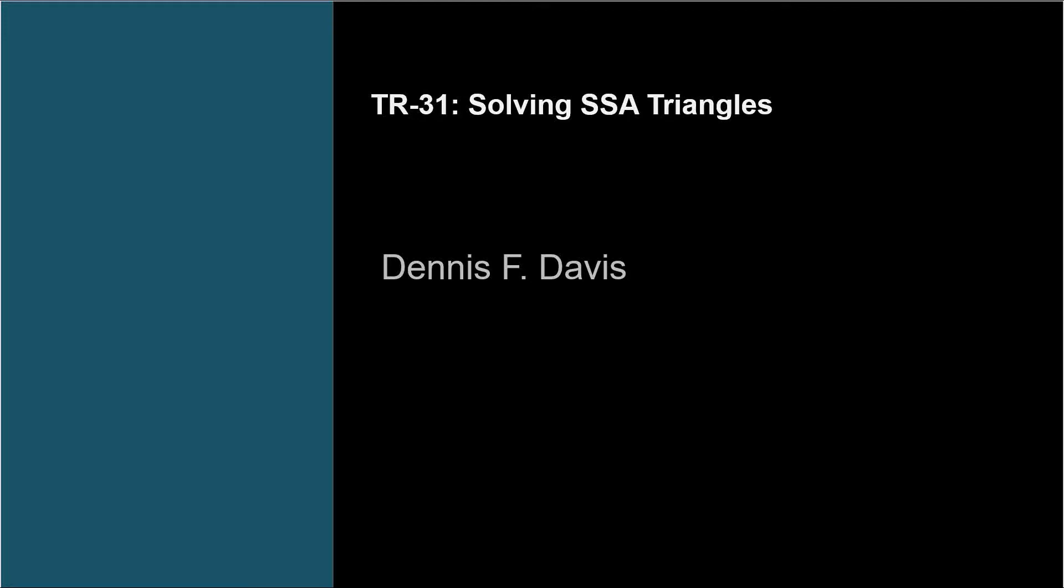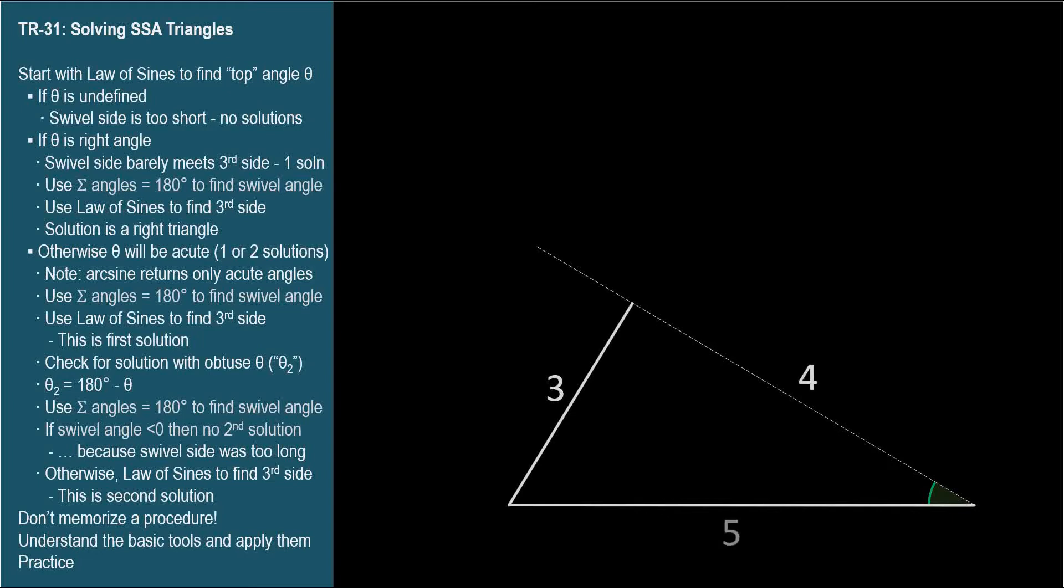Let's investigate the various SSA scenarios described in TR-30. I'm going to choose the given angle that can yield a 3-4-5 triangle.